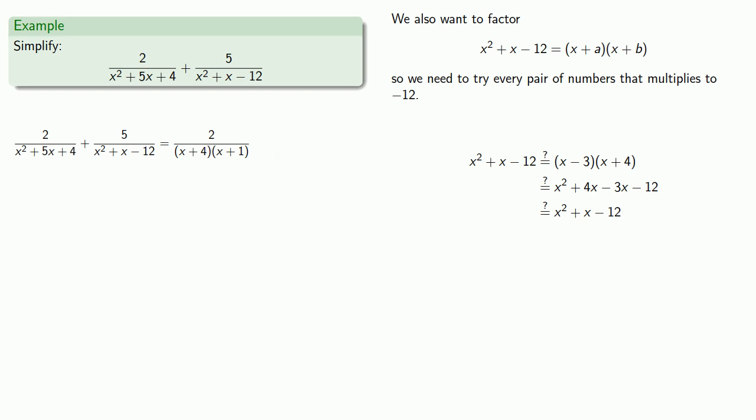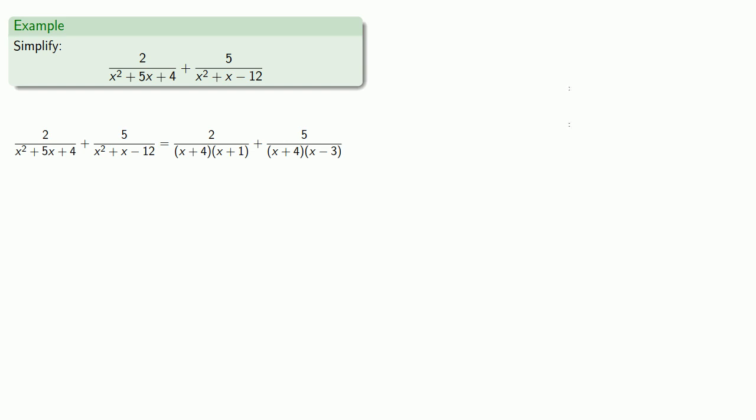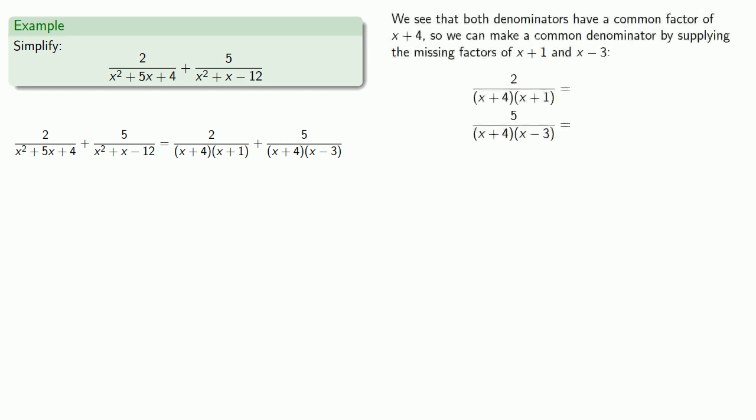And so we'll write our second rational expression with the denominator in factored form. Now we see that both denominators have a common factor of x plus 4, and so we can make a common denominator by supplying the missing factors of x plus 1 and x minus 3. So this first rational expression, 2 over x plus 4 times x plus 1, the missing factor is x minus 3. So we'll multiply the numerator and denominator by x minus 3.